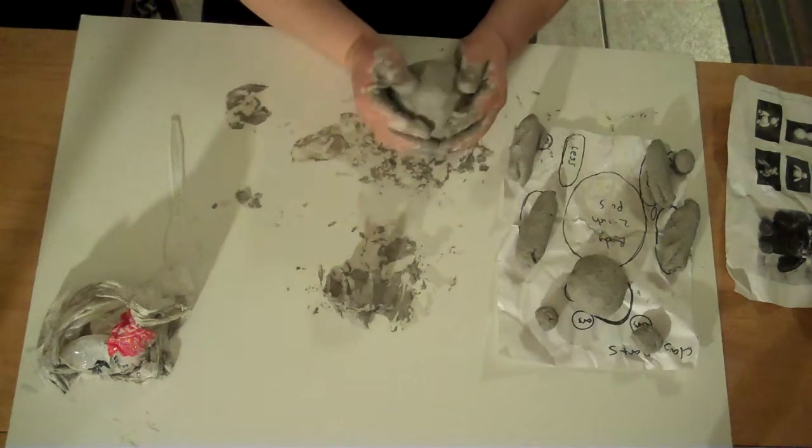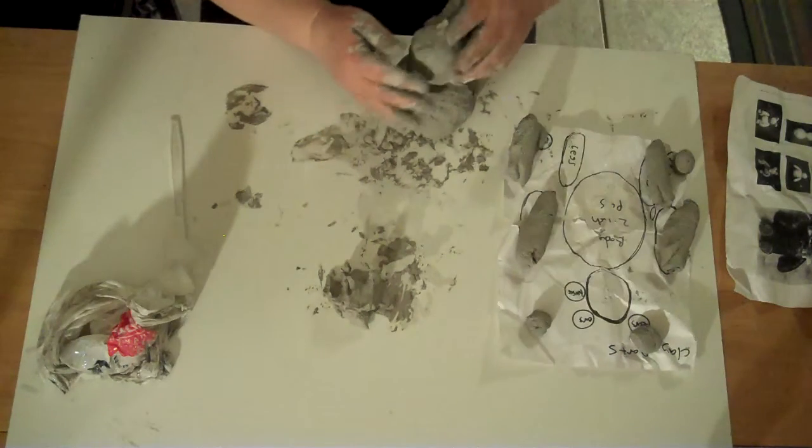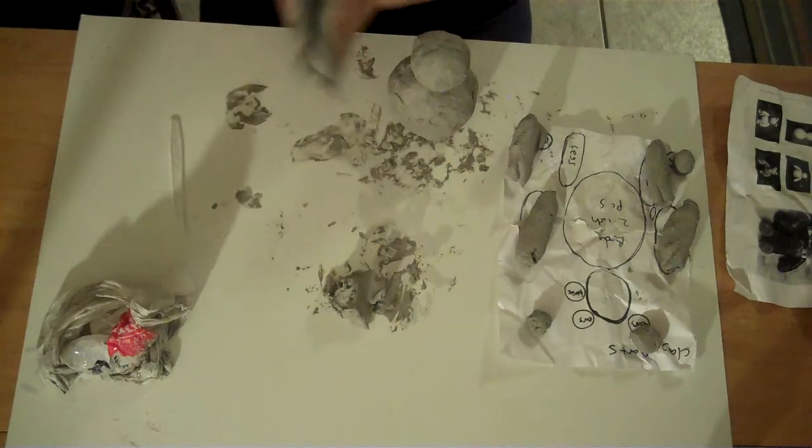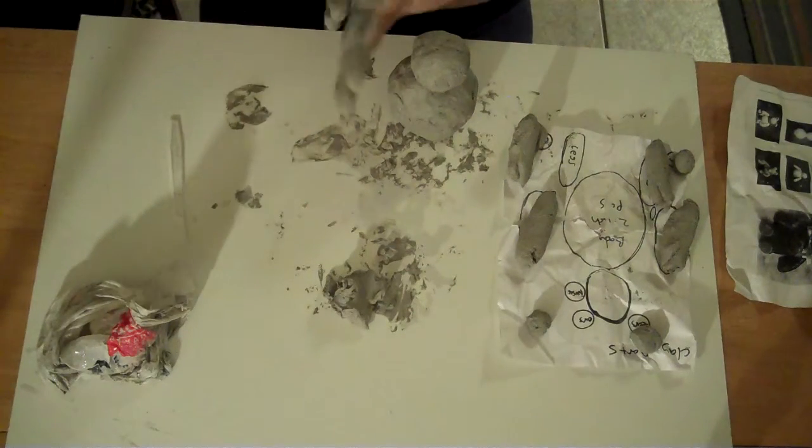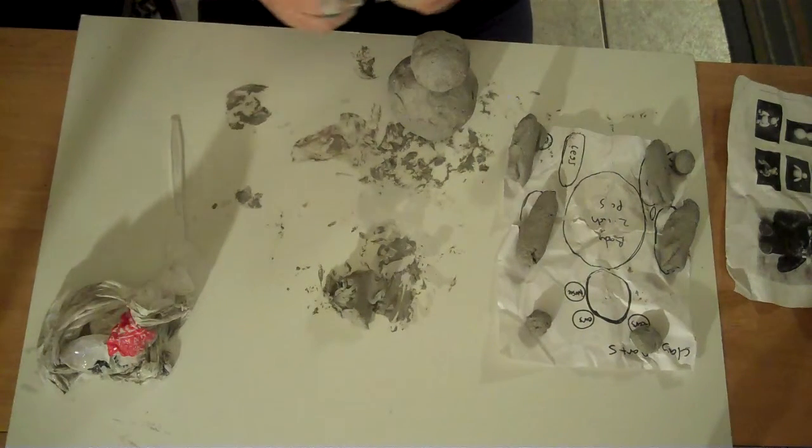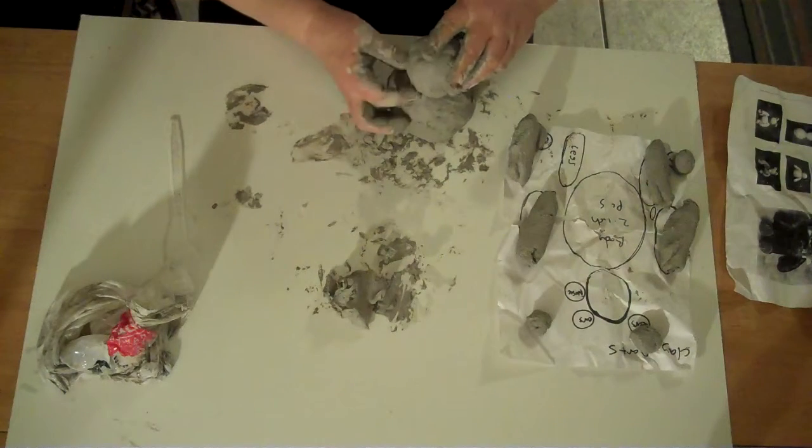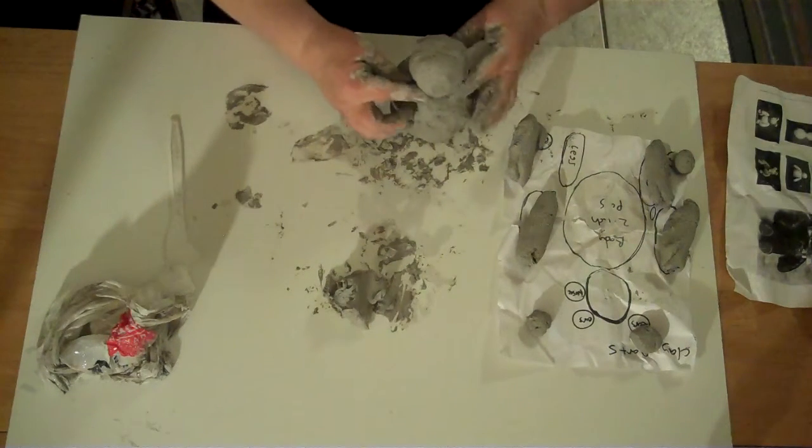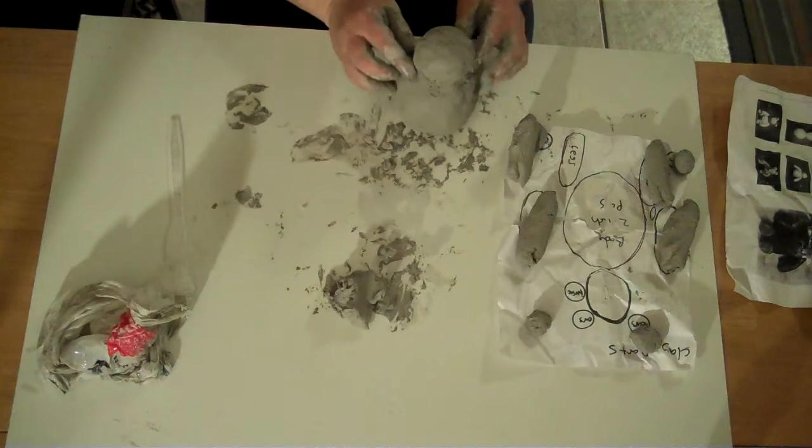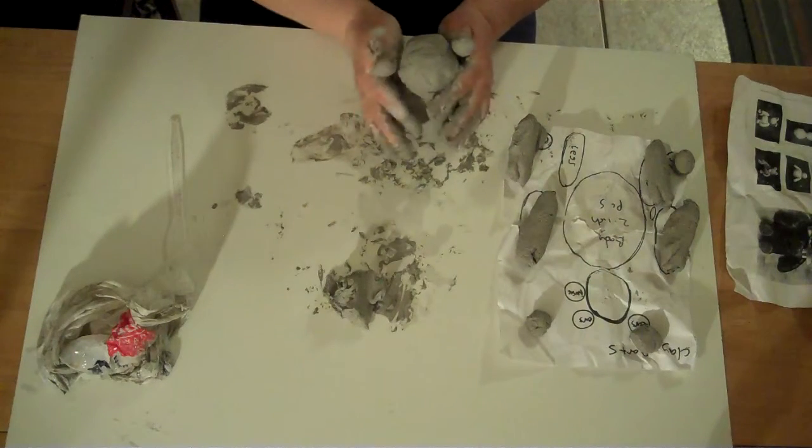So you're going to take the body and your bear is sitting down. Take the head, sit it on top, and then you're going to roll what's called a coil—just a snake, but we're going to use the correct terminology, a coil. And you're going to join the head. So now it's just one piece of clay, not separate pieces. When it dries, it won't crack apart.